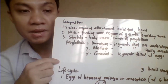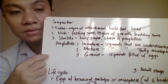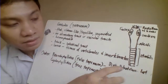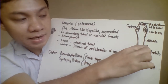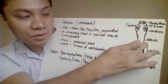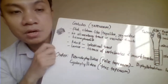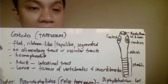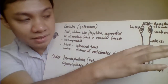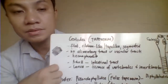The mature proglottids are segments that are fully developed. The gravid proglottids are segments that already contain eggs. In the drawing, the immature proglottids are closest to the neck part, followed by mature proglottids, and the gravid proglottids are at the end. The entire segmented portion is called the strobila.